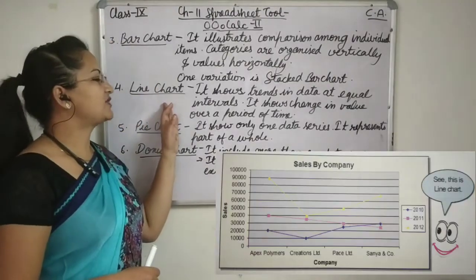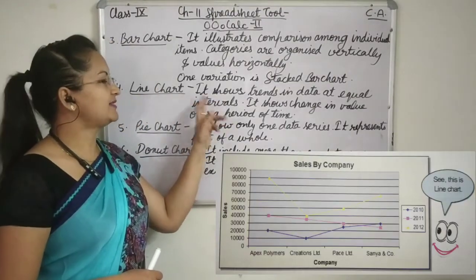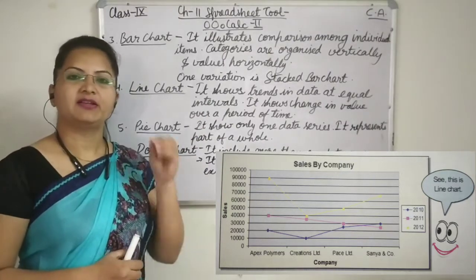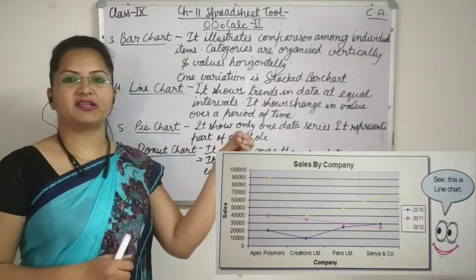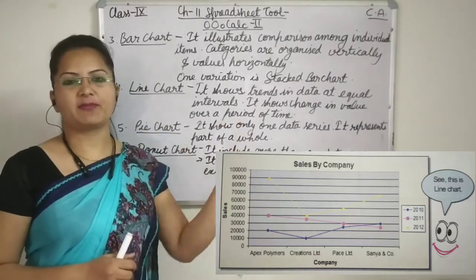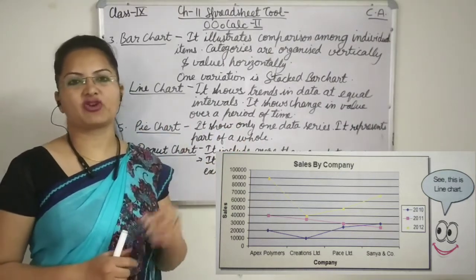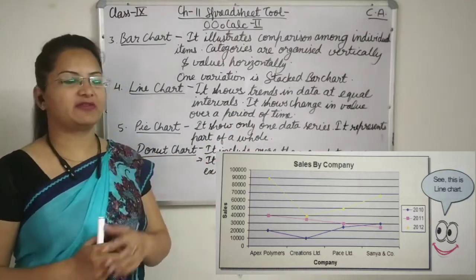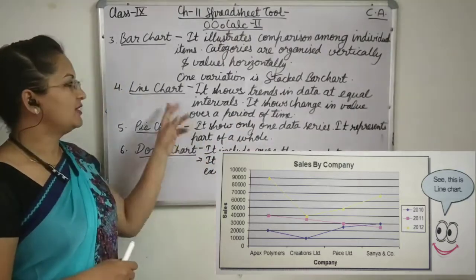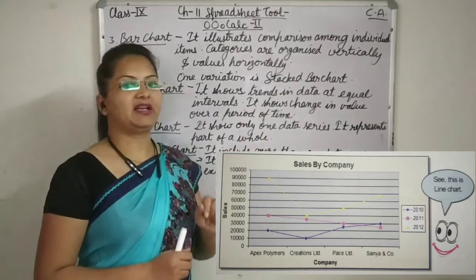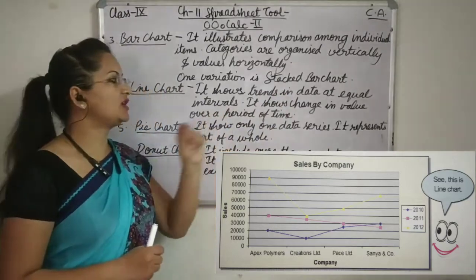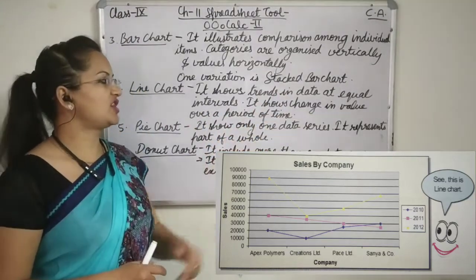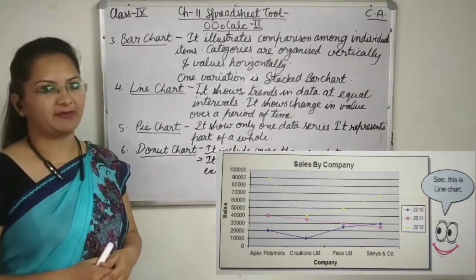Now line chart. As the name suggests, in place of columns and bars, the data series — meaning data points — will be joined with a line and every line will be of different color. It actually shows trend data at equal intervals and it shows change in value over a period of time.